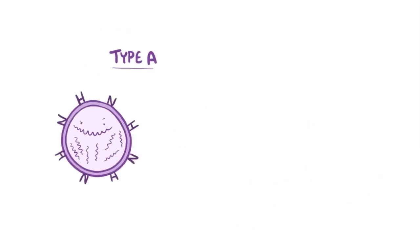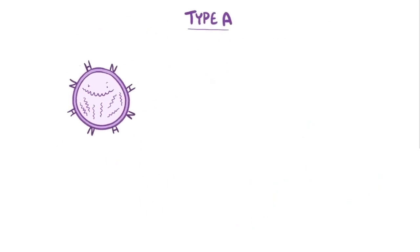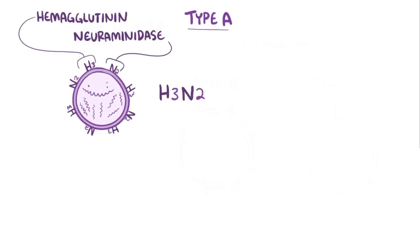Type A, the most common type of influenza virus, can be further subdivided based on two of the glycoproteins on its protective envelope surface, H-protein or hemagglutinin and N-protein or neuraminidase. Hemagglutinin and neuraminidase can vary a bit in their structure, so different versions are identified by a number. For example, type A subtype H3N2, sometimes just called H3N2, has hemagglutinin number 3 and neuraminidase number 2 on its surface.